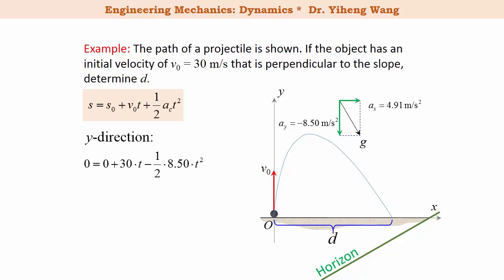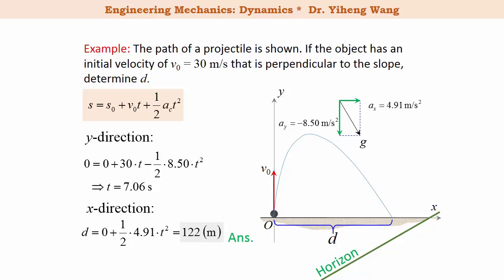The advantage of this method is that along the y direction the final position is also zero. Therefore from this equation alone you can solve for time as 7.06 seconds, instead of having to solve a system of equations simultaneously. Plugging this into the x-direction equation gives d = 122 meters directly — the same answer as before. It's just an alternative way to solve the same problem, and it is up to you to decide which method you prefer.